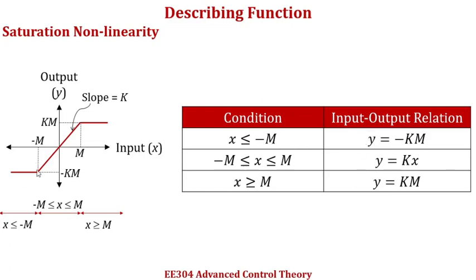For x less than or equal to minus m, that is from this point towards negative infinity, the value of y is minus km, as written in the table. The second part is where x is between minus m and m, representing a straight line passing through the origin. From fundamentals, a straight line through the origin has the form y equals mx; here the slope m is denoted as k, so y is equal to kx. The third part is where x is greater than or equal to m, so from this point towards positive infinity, the value of y is km.